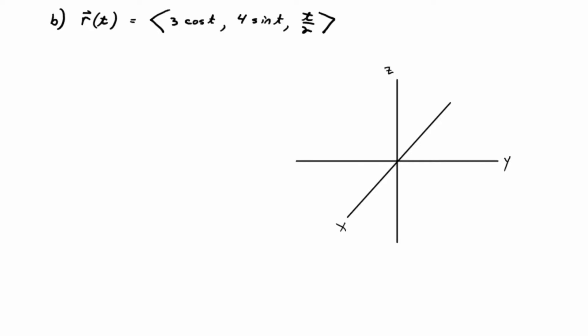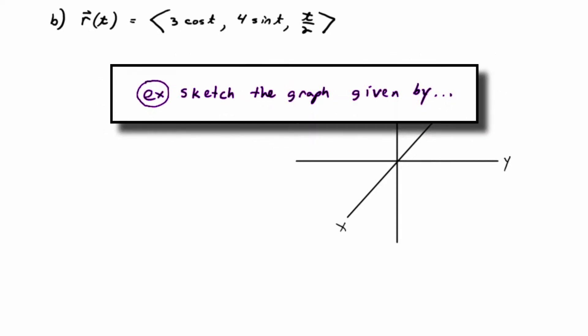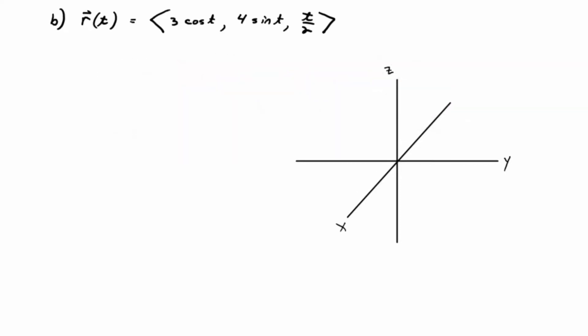So the directions are to graph the curve. Sketch the graph given by R of t equals the vector-valued function 3 cosine t, 4 sine t, t over 2. Oftentimes, instead of using f and g of t in space, we call the first component x of t, the second component y of t, and the third component z of t. If you wanted to, you could write down three parametric equations: x of t equals 3 cosine t, y of t equals 4 sine t, and z of t equals t over 2. But there's no reason to. We'll leave it in vector-valued function form.